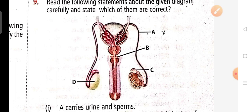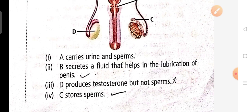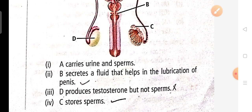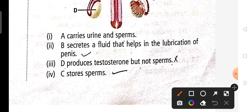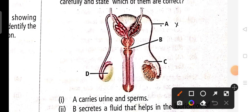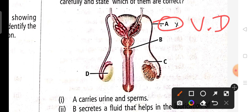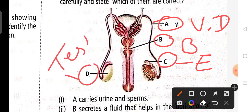Ninth question: this is a diagrammatic representation. The correct answer is option C — the second and fourth options. B indicates the bulbourethral gland, which secretes fluid that helps in lubrication of the penis. The fourth option indicates where sperm are stored — in the epididymis. In this diagram, A indicates the vas deferens arising from the cauda epididymis, B is the bulbourethral gland, C is the caput epididymis, and D is the testis.